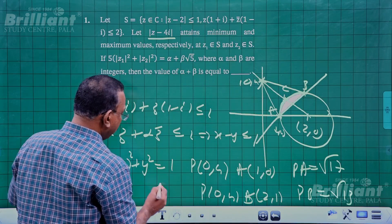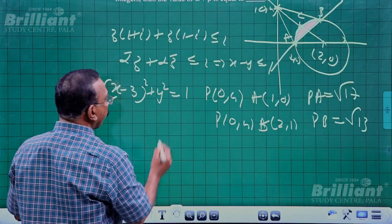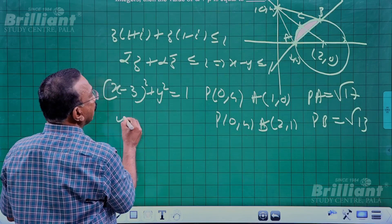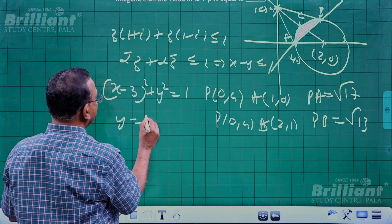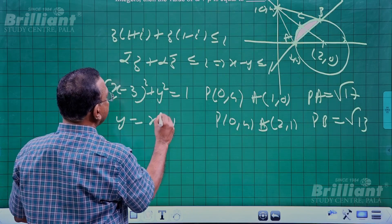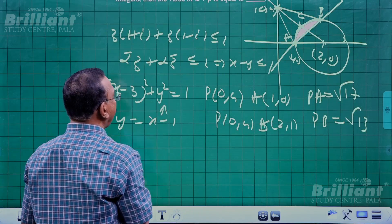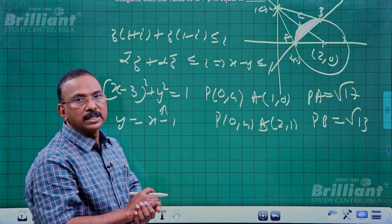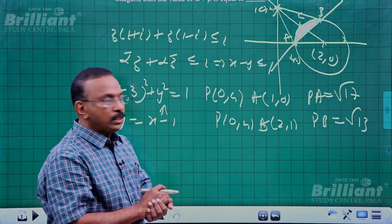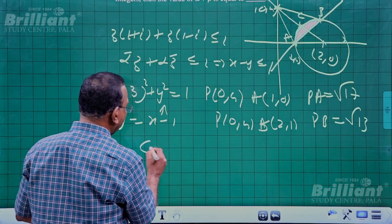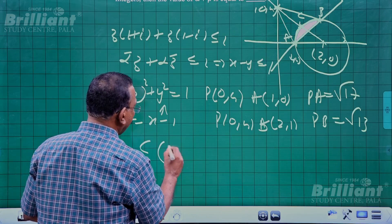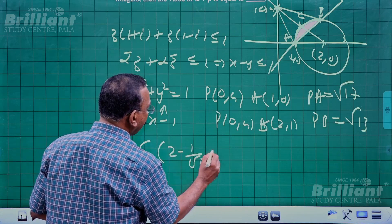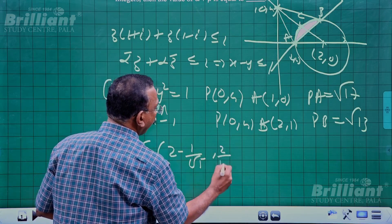Equating and solving, we get y = x - 1. Substituting and solving yields the coordinate C = (2 - 1/√5, 2/√5).